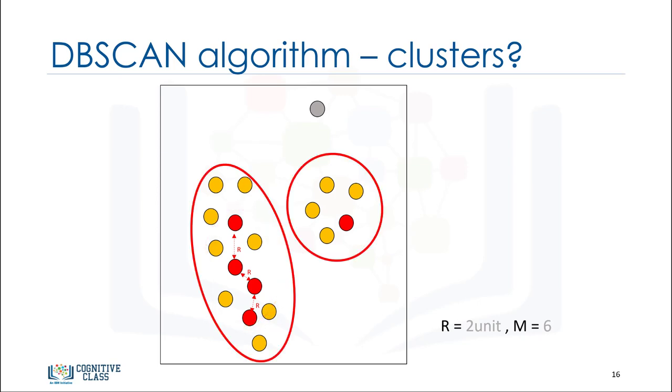So, a cluster is formed as at least one core point plus all reachable core points plus all their borders. It simply shapes all the clusters and finds outliers as well.